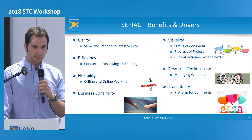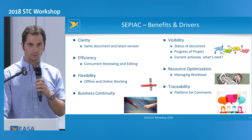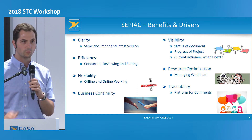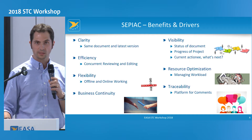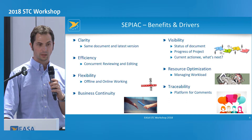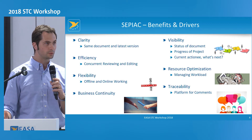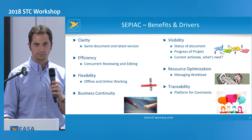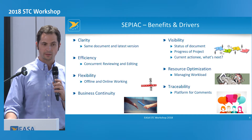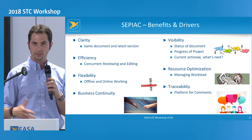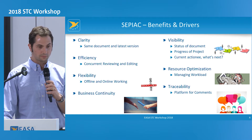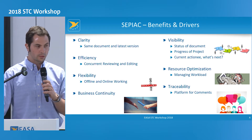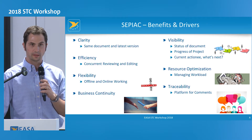This is a comprehensive slide showing the benefits and drivers. The first one is clarity. SharePoint offers advantages compared to a normal Windows file system, particularly versioning — so it's always clear which is the latest version of a document. We also have the possibility of concurrent reviewing and editing of documents, which applies to Microsoft documents. With PDFs it's a bit more complicated, but you can check out documents so everybody knows you are working on them. It offers flexibility to work online or offline while traveling, allowing better business continuity. The platform is available 24/7.